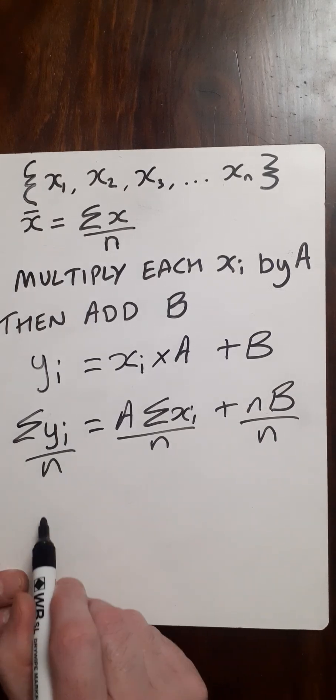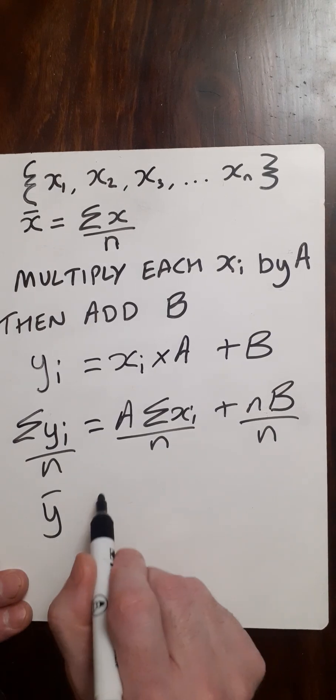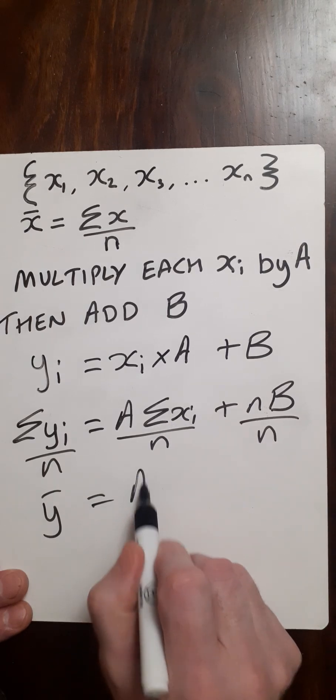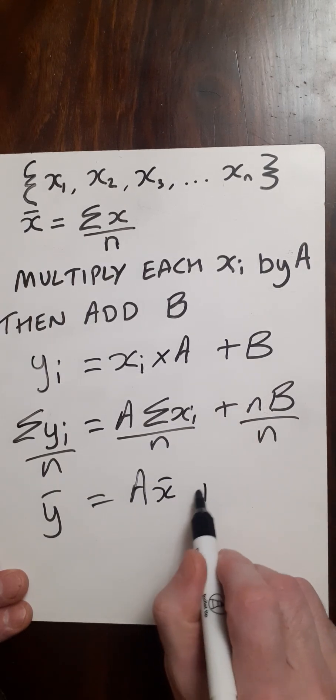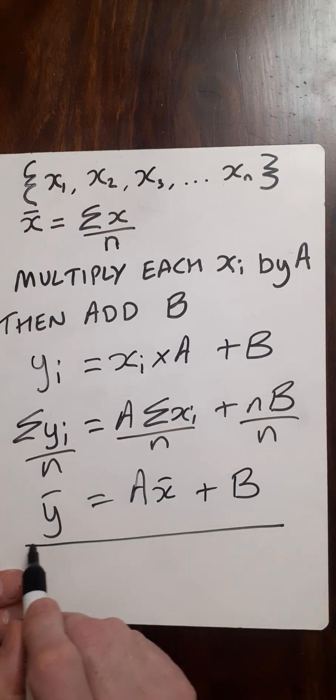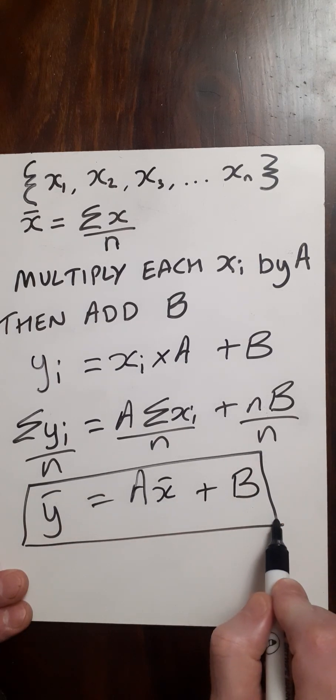And then we get, here we just get the mean, that's ȳ. Here we get A times the mean of the x's, so that's A times x̄ plus a constant B. So therefore our new mean will be A times the mean plus B.